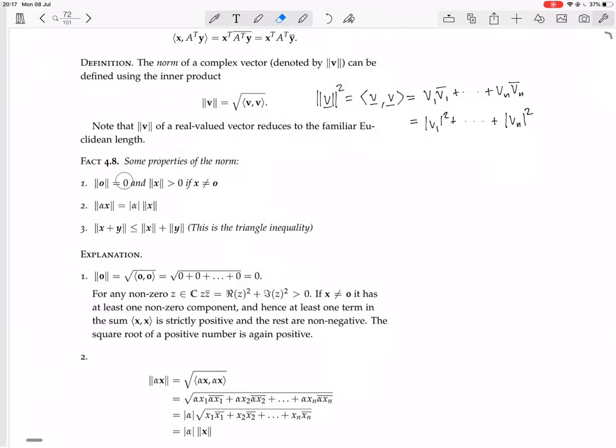Firstly, the norm of the zero vector is zero. And also, the norm of a vector is greater than zero if the vector is not equal to zero. So it's real and positive, unless the vector is zero, in which case it's zero.